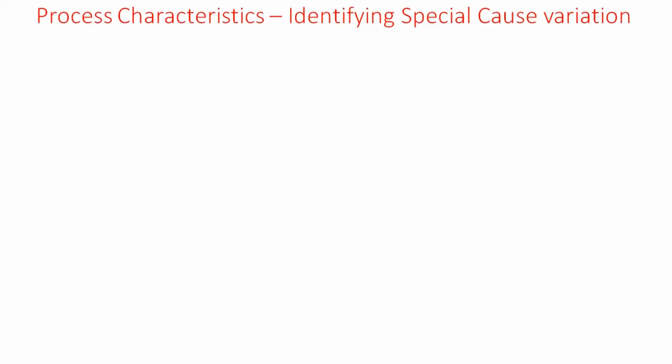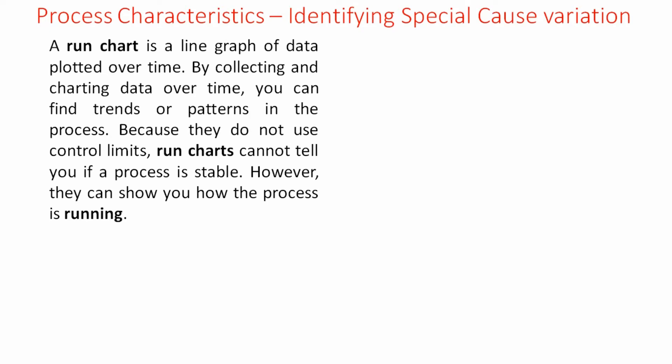Process characteristics: Identifying special cause variation. You can identify special cause variation by using a run chart. So what is a run chart? A run chart is a line graph of data plotted over time. It is also called a time series plot. By collecting and charting data over time you can find trends or patterns in the process. Because they do not use control limits, run charts cannot tell you if a process is stable. However they can show you how the process is running.